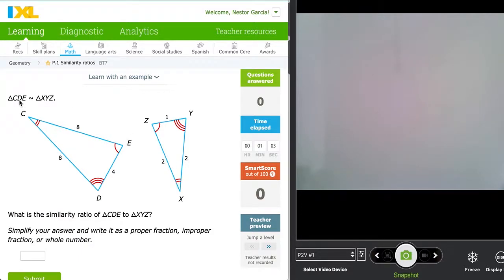Angle D corresponds to angle Y. Angle D has three arcs, corresponds to angle Y which has three arcs. And lastly angle E corresponds to angle Z. Angle E has one arc, angle Z has one arc. Therefore they have the same angle measurement.